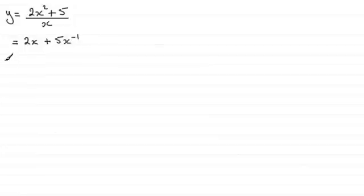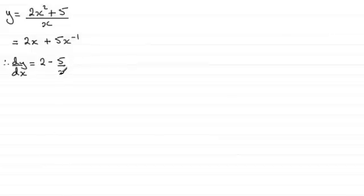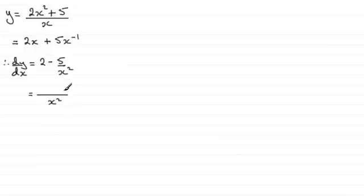To differentiate this we'd have dy/dx equals 2, and then for this term it would have been minus 5x to the power minus 2, which would be the same as 5 over x squared. You could have possibly left it like that, or you might have simplified it further by putting it all over a common denominator of x squared. That would mean this 2 would have to be multiplied by x squared, and this would just be left as minus 5, giving us this simplified version for dy/dx.